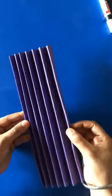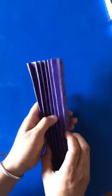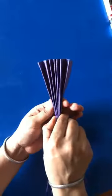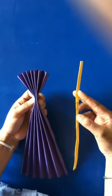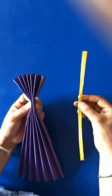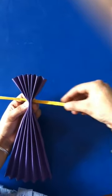Now hold the paper from here. You can take a long strip of any color. I'm taking the strip of yellow color. Place it here and we will make a knot over it like this.